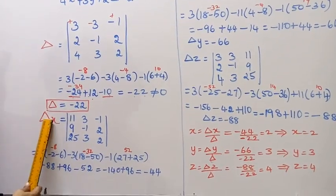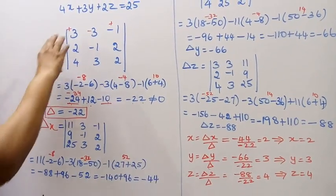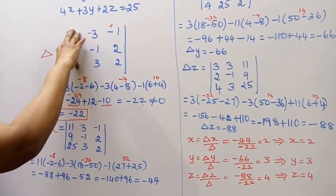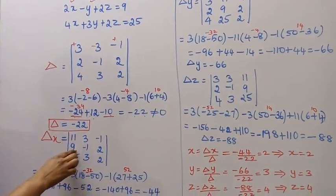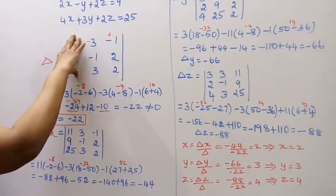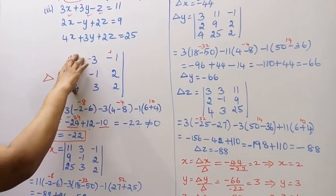Now delta x - delta x, we take this value and put it here. This value we put here: 11, 9, 25. We put 11, 9, 25 in the first column instead of this.